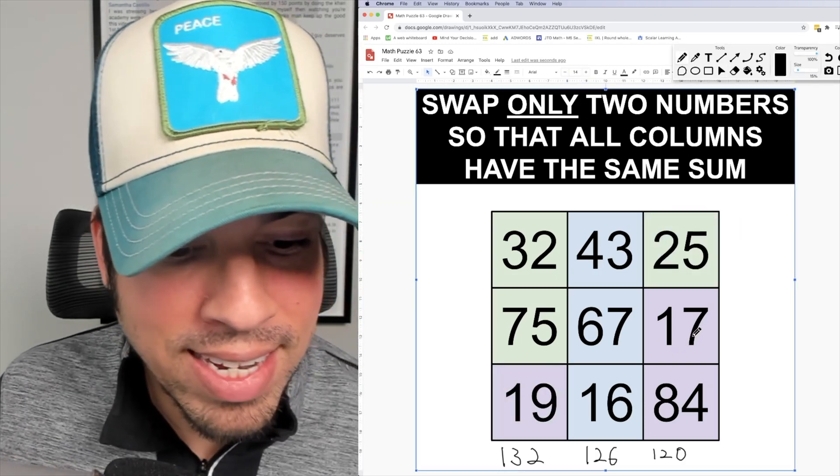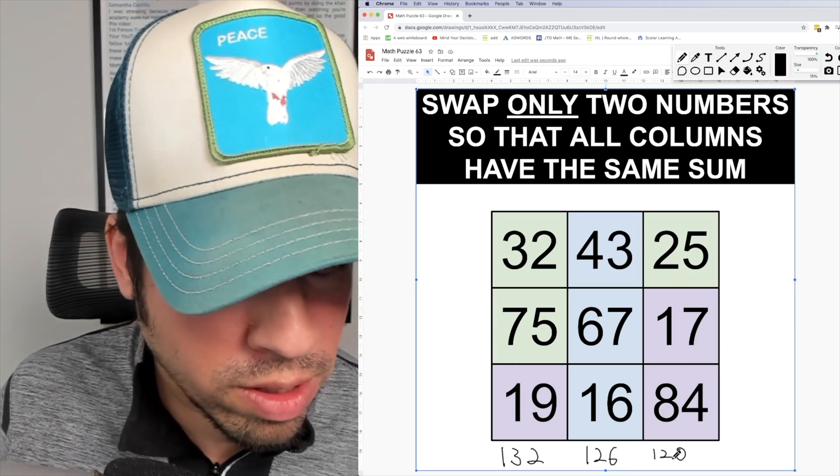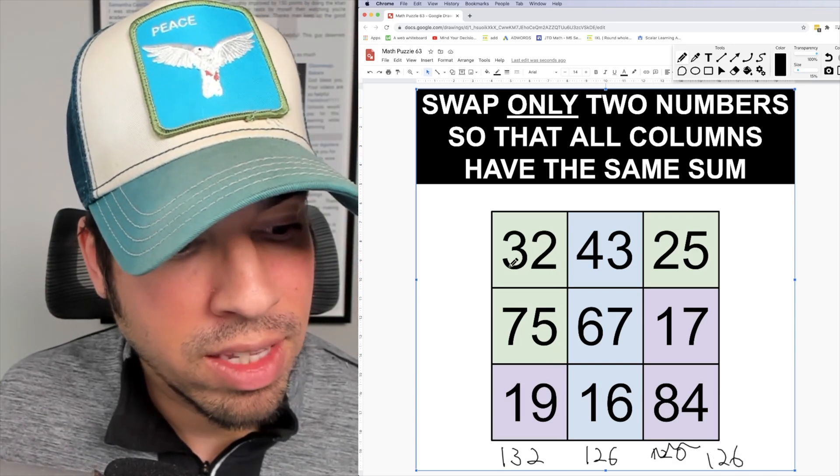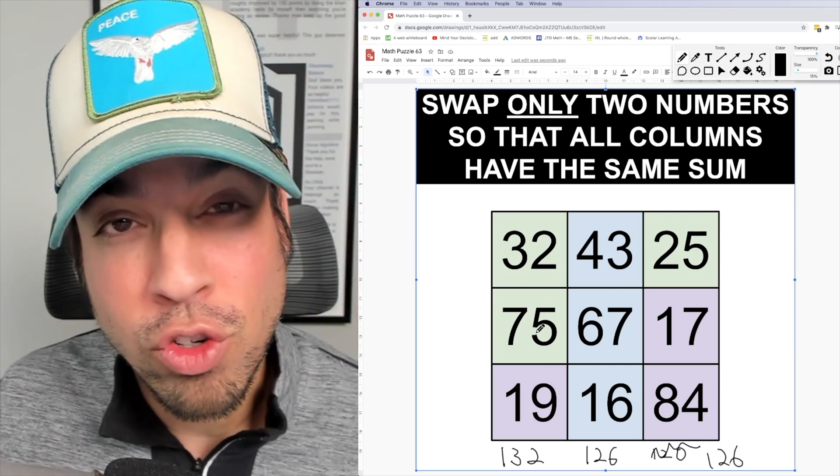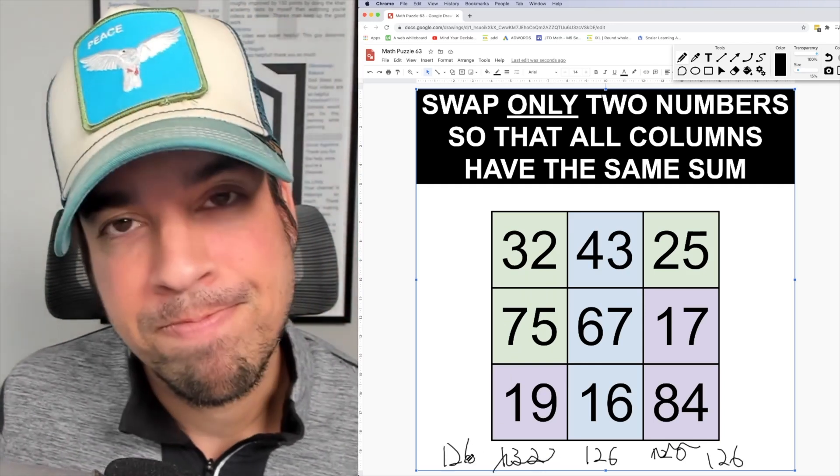Now when I take the sum I get 17 plus 84 is 101 plus 25 is 126. And when I add these guys I get 32 plus 75 that's 107 plus 19 is also 126. And we're done.